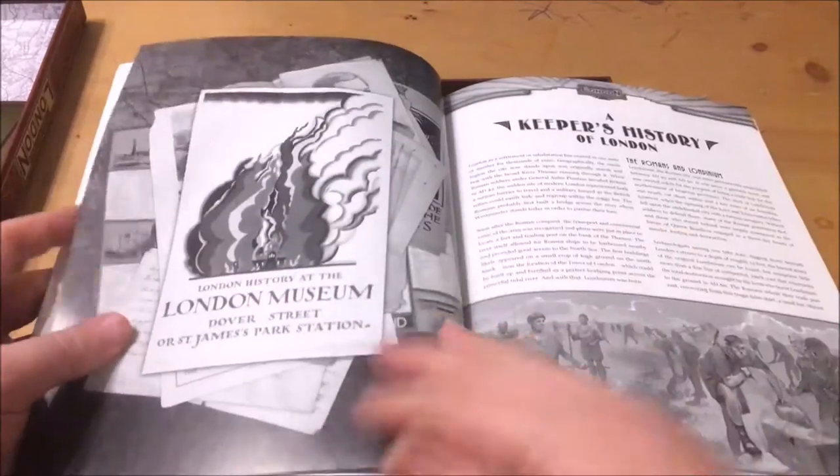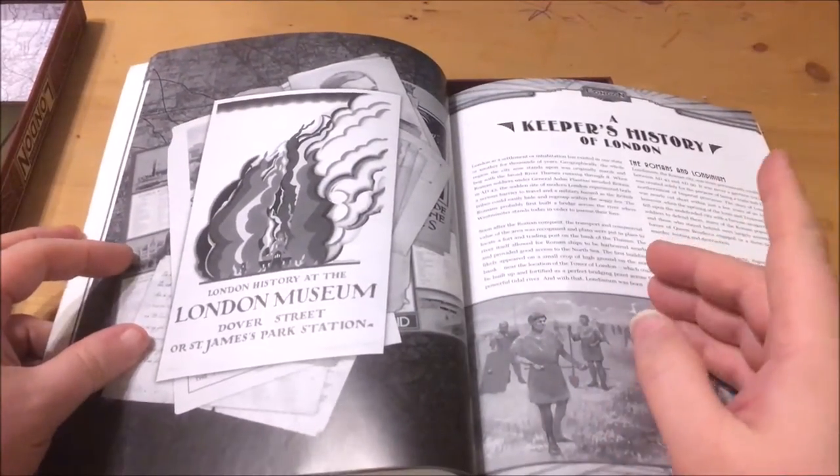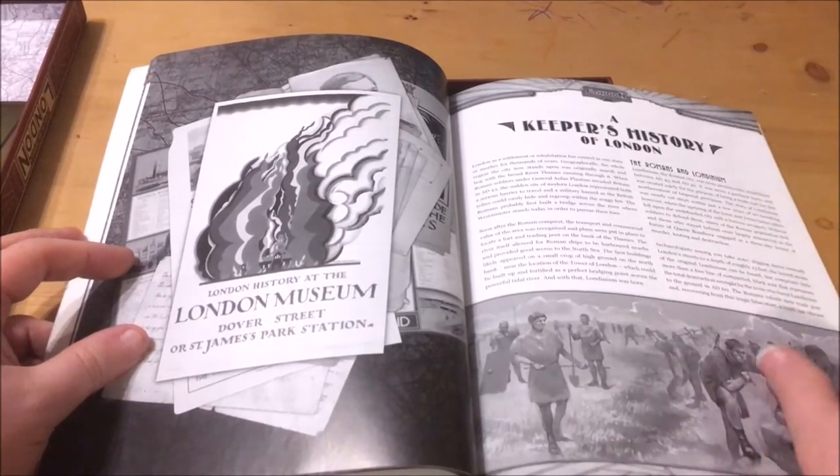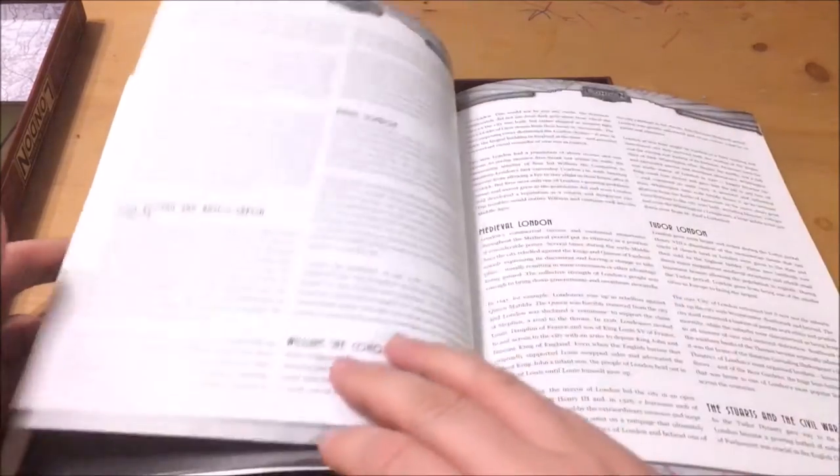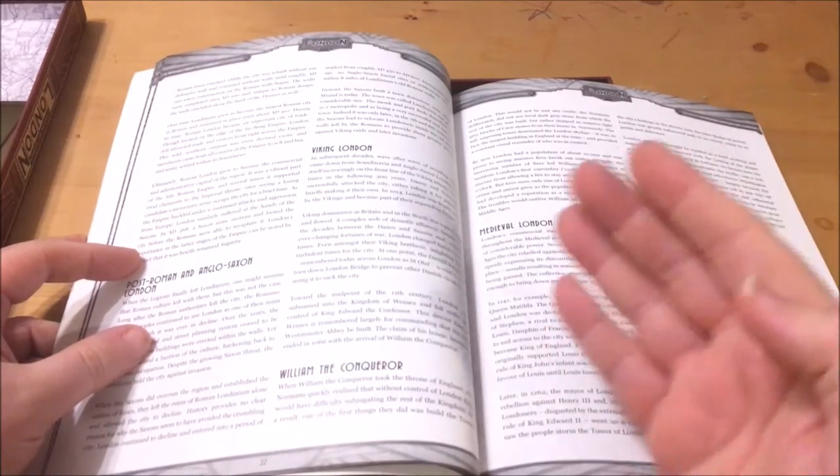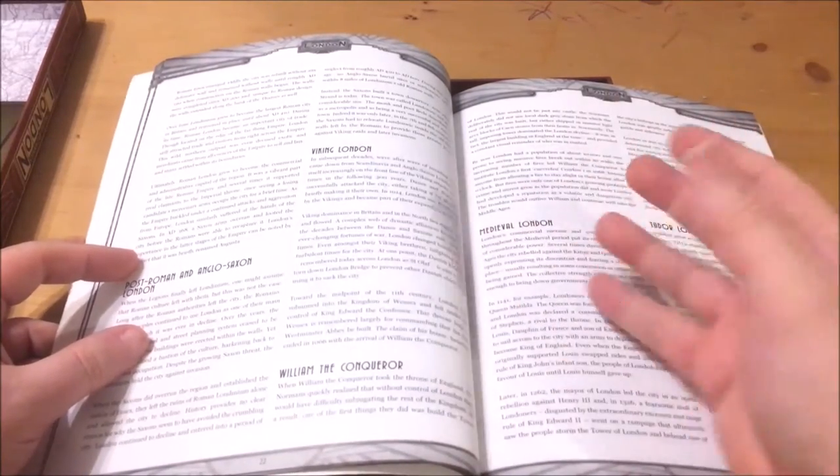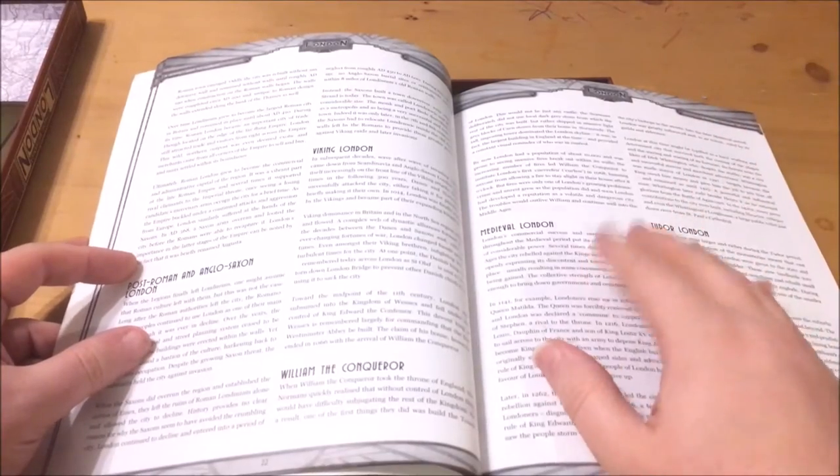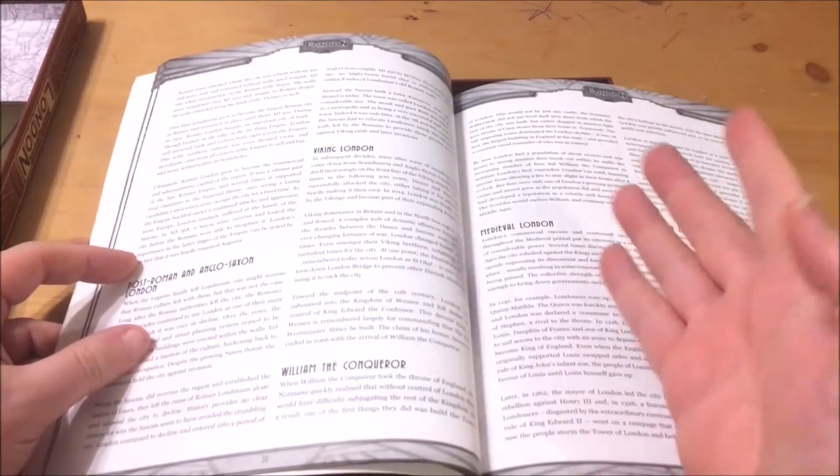The next chapter is called The Keeper's History of London. This goes on to delve into the deeper history of London right back from when the Romans conquered Britain through Queen Boudicca sacking the city and the Viking invasion to William the Conqueror, the Tudors, the Stuarts and the Civil War and the restoration of the monarchy right the way to Victorian London and the early 20th century.